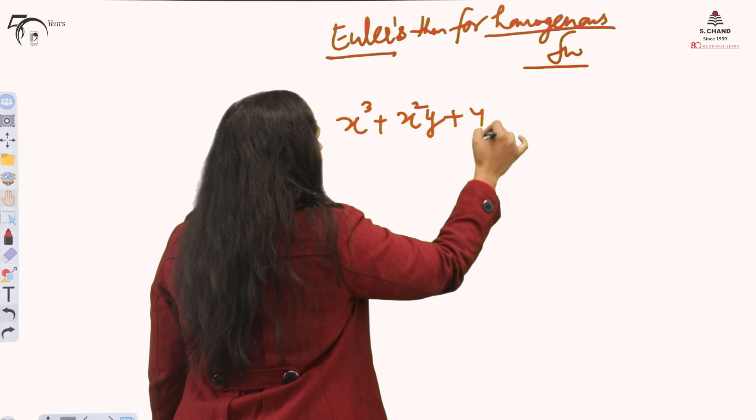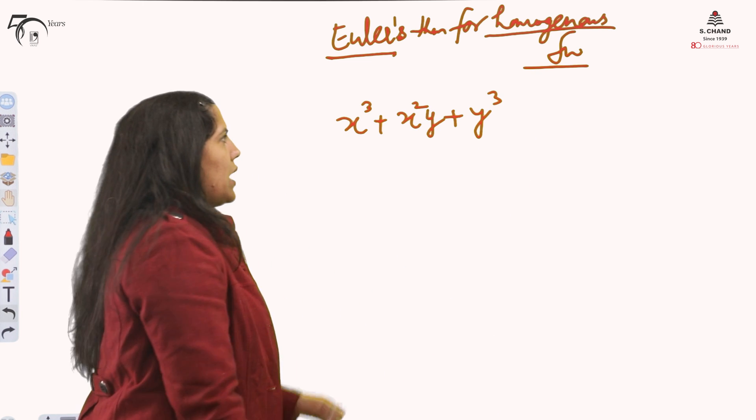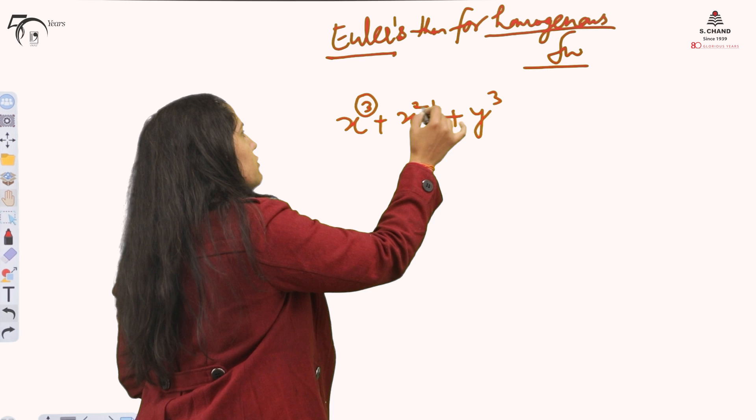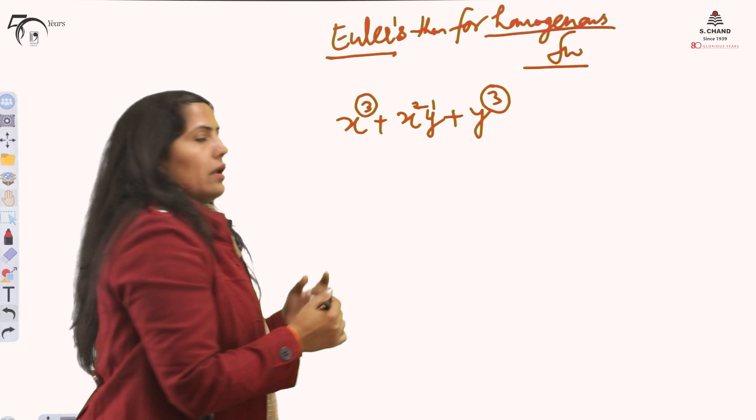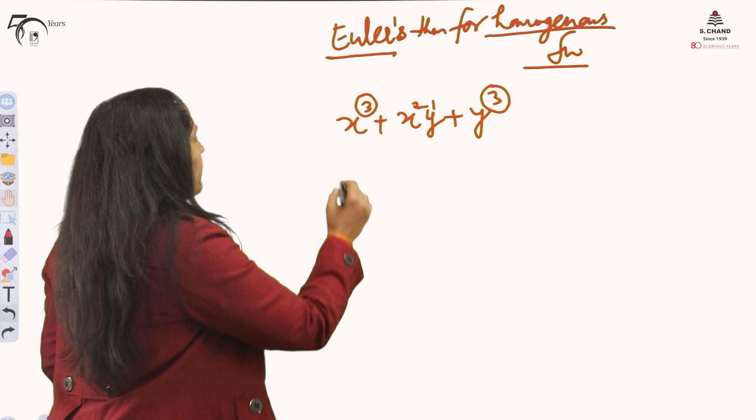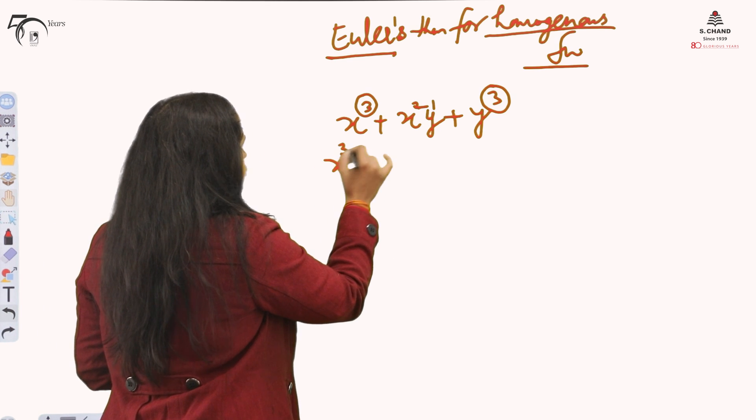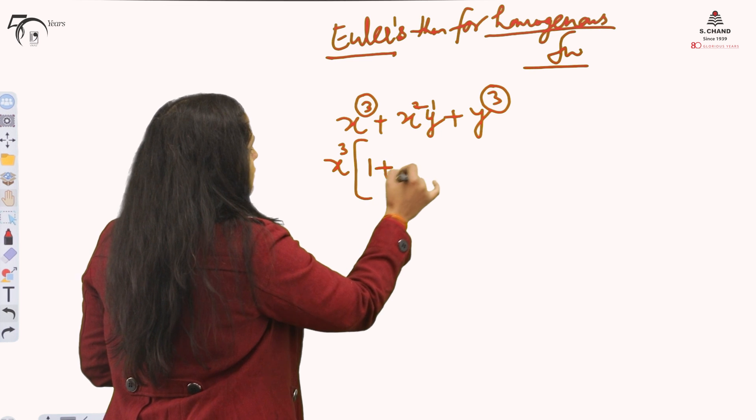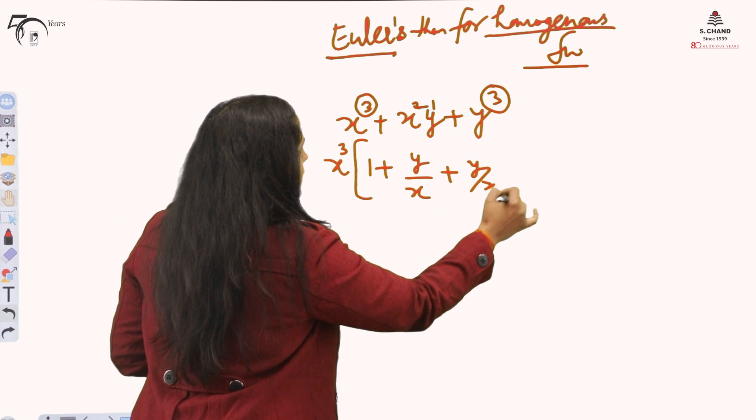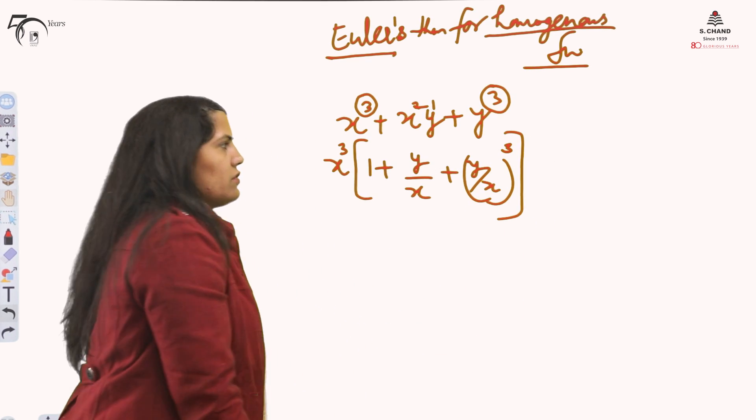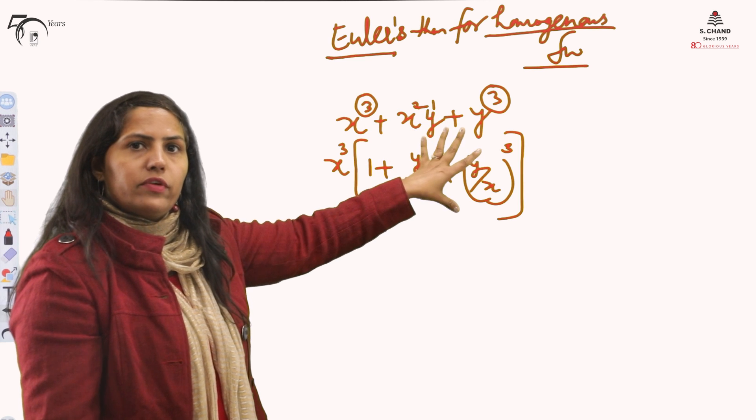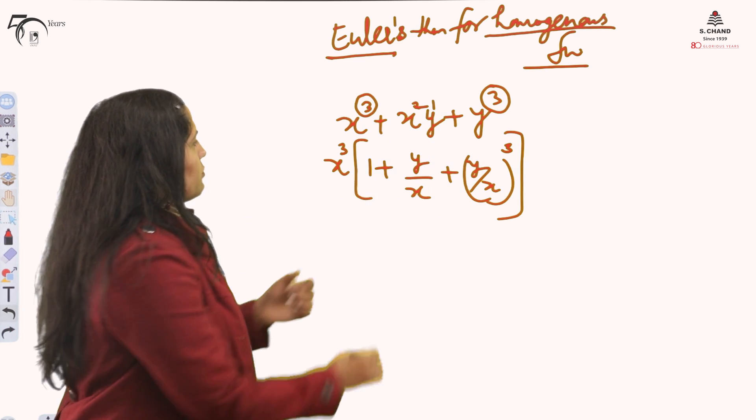Can you see the powers? When you are adding the powers, this is 3, 2 plus 1 is 3, and this is 3. There is another way to check whether the function is homogeneous or not. You just take out x cube outside. Then this expression will become this. If your complete expression is in y by x form and some power of x is outside, this type of expression is also and this is most common.